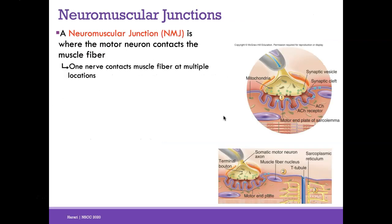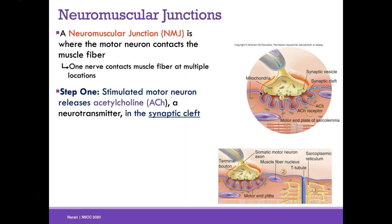To see how a muscle cell is stimulated, we zoom in to the neuromuscular junction, or NMJ. This is where a motor neuron contacts the muscle fiber. One neuron contacts the muscle fiber at multiple locations along the sarcolemma, so multiple receptors can be activated at once. At the end of the motor neuron is a synapse — a space between the end of the motor neuron and the start of the sarcolemma, specifically called the synaptic cleft.